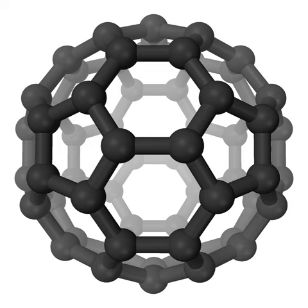Hydrogen deuteride is a diatomic molecule — a substance or compound of the two isotopes of hydrogen: the majority isotope 1H (protium) and 2H (deuterium). Its proper molecular formula is H2H, but for simplification it is usually written as HD.